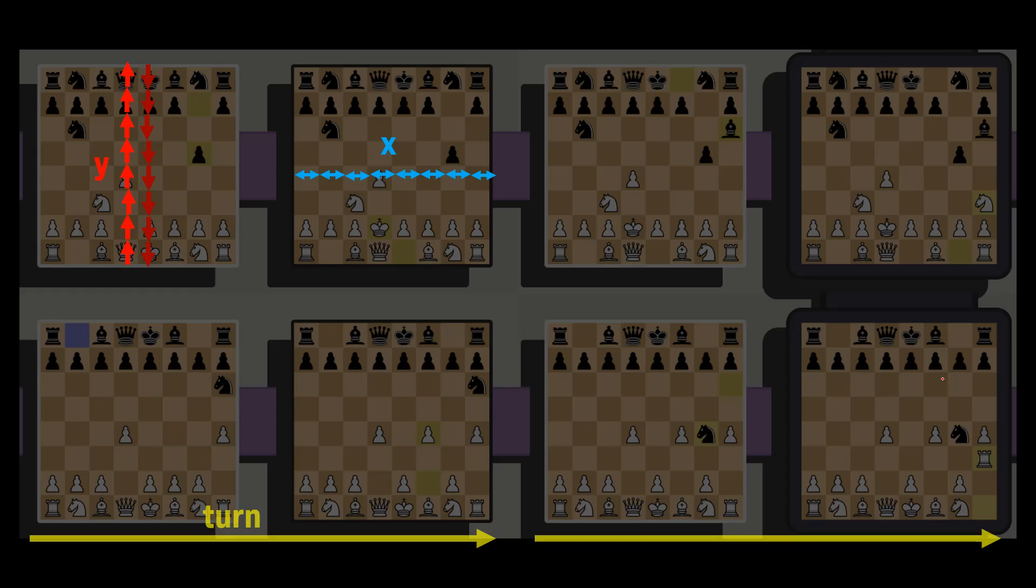5D Chess introduces the turn and timeline dimensions. The turn dimension moves forwards to the right. Remember that two boards is equal to one turn. So from here to here is one unit. Similar to the Y dimension,